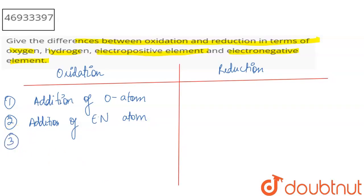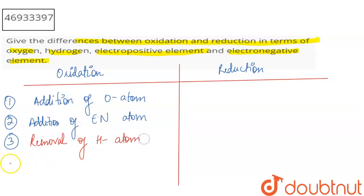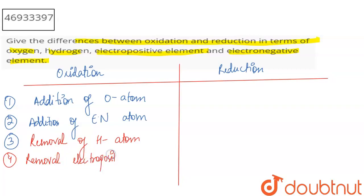Now talking about hydrogen and electropositive elements in the context of oxidation: removal of hydrogen atom is your oxidation, and removal of an electropositive element is also your oxidation.